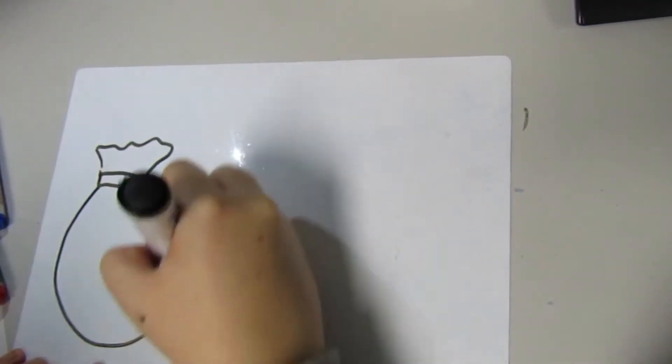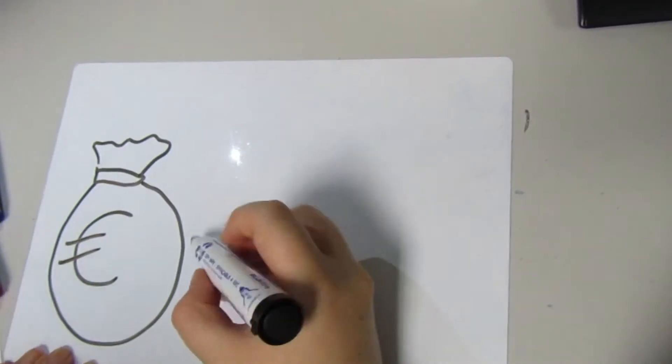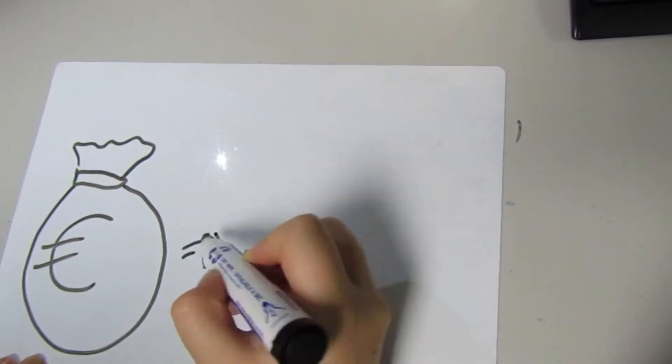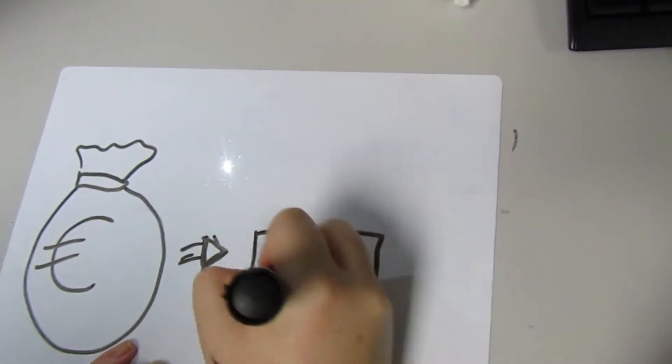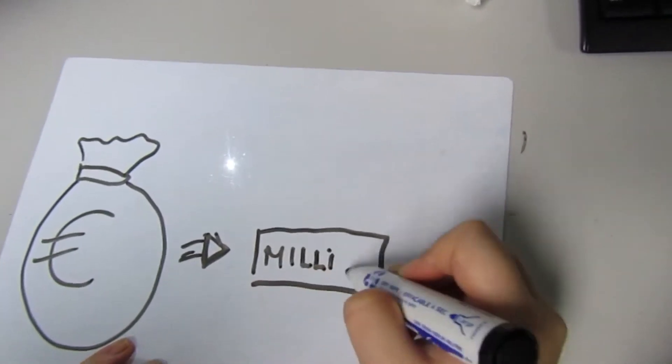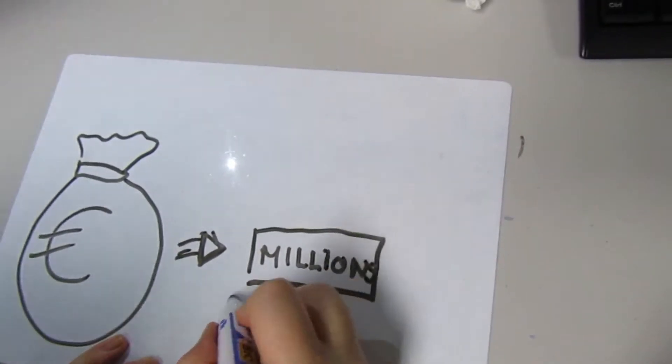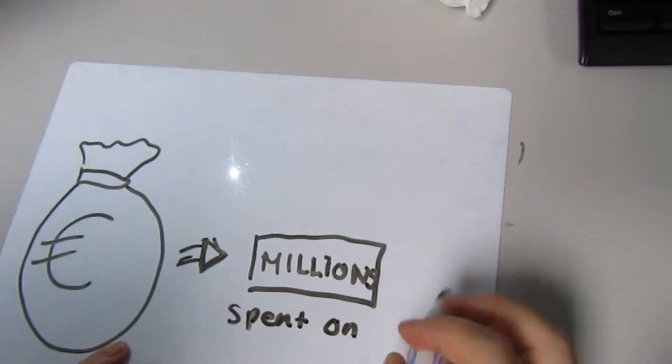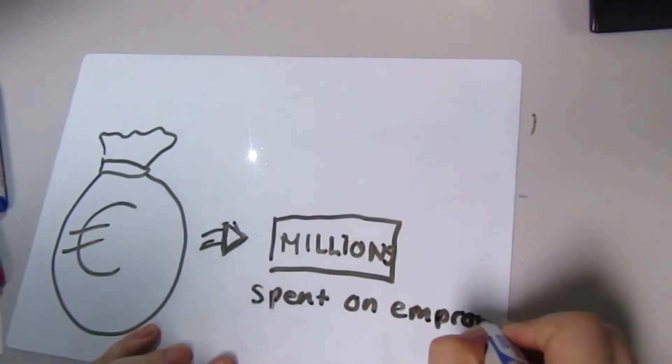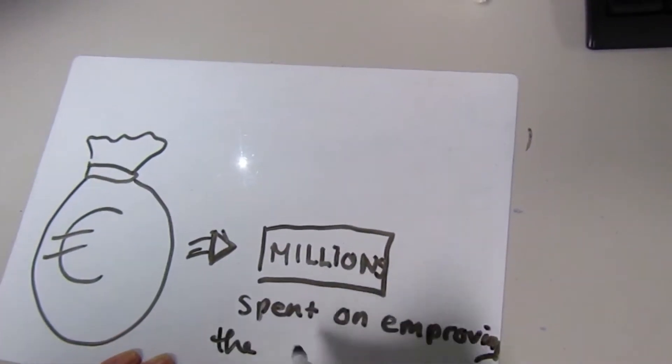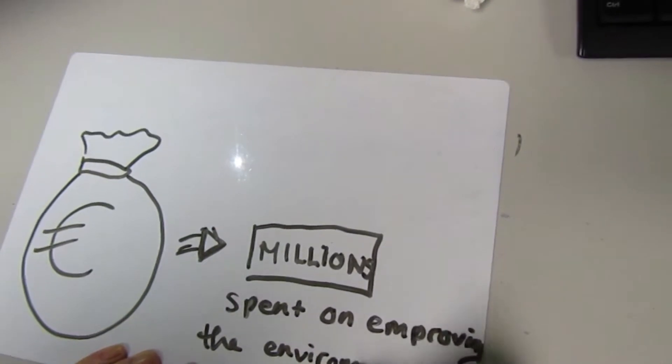According to the Independent newspaper, Dublin City Council alone will spend around 250,000 euros removing gum from the city centre's main pathways this year. Imagine what good this money could be used for. Instead, it's being spent cleaning up what easily could have been prevented.